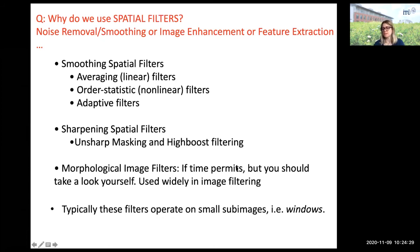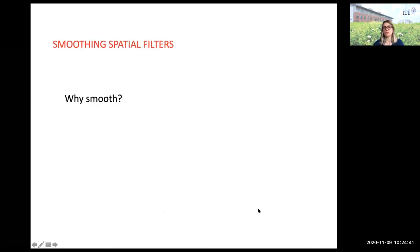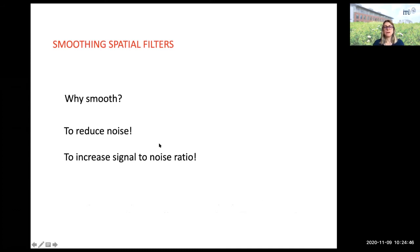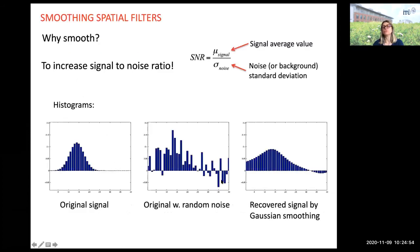These filters operate on small sub-images or windows. Why smooth? Of course, we want to reduce noise and increase the signal-to-noise ratio. SNR is defined as the signal average value over the noise standard deviation. We are trying to decrease the noise standard deviation to increase the SNR. For instance, if the original signal had a histogram like a nice smooth Gaussian, and I corrupted it with noise, I would see a noisy-looking histogram.